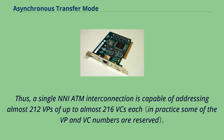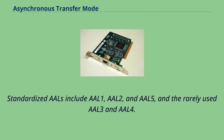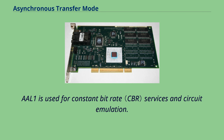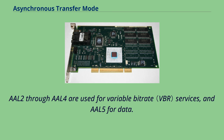ATM supports different types of services via AALs. Standardized AALs include AAL1, AAL2, and AAL5, and the rarely used AAL3 and AAL4. AAL1 is used for constant bitrate services and circuit emulation; synchronization is also maintained at AAL1. AAL2 through AAL4 are used for variable bitrate services, and AAL5 for data.